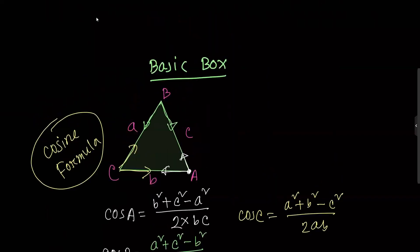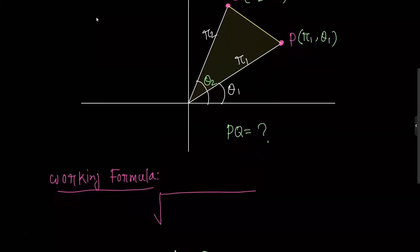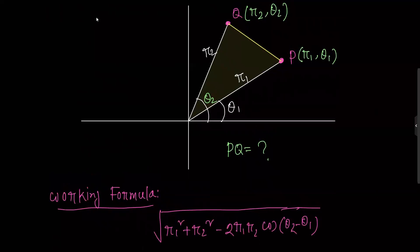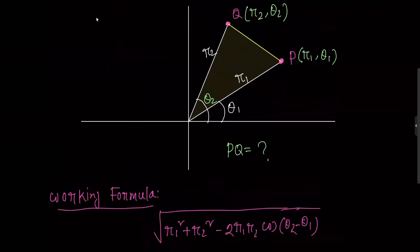Now we will apply this concept to our problem. We will use the working formula. The working formula is: d equals root over r1 squared plus r2 squared minus twice r1 r2 cosine of theta2 minus theta1.